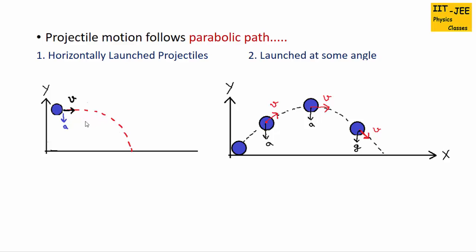There are two kinds of projectile motion. The first is a horizontally launched projectile, where the object is launched towards the left or right. In this case the initial velocity is only Vx, and Vy equals zero because no vertical velocity is given, so the object follows a parabolic path. The second kind is when the object is launched at some angle theta from horizontal, so the velocity is at angle theta and the object follows a parabolic path.